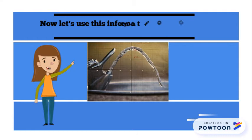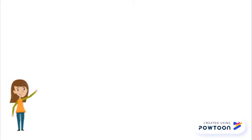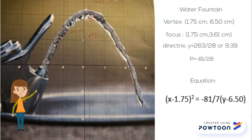Now let's use this information on a real life parabola and find its equation. To find my equation for the water fountain, I first found the highest point on my parabola, which is the vertex.